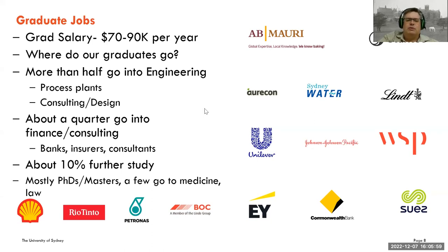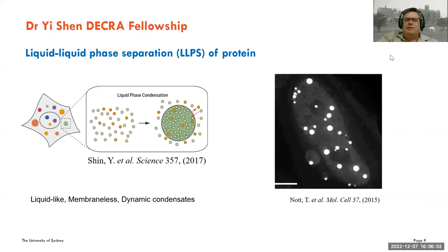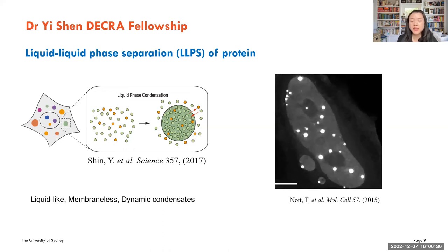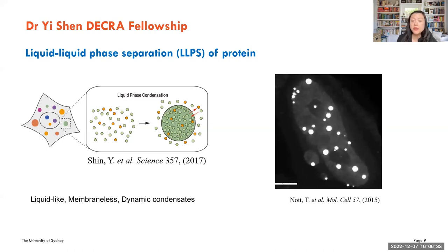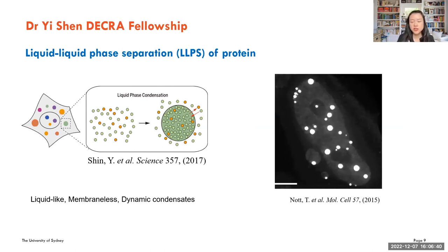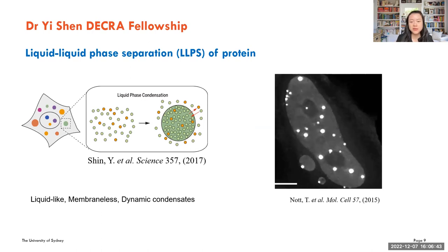Dr. Yi, do you want to talk a bit about the DECRA fellowship you've just been awarded? Yes, I was really glad to receive this fellowship, which will allow me to do research in the protein-focused area. Protein is important because you can find it everywhere — especially in food and in cells. I'm going to talk about something related to health and also to sustainable manufacturing. Protein has a lot of level structures and that makes them very interactive.